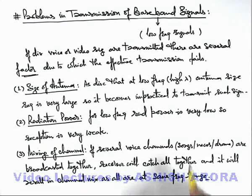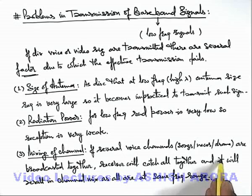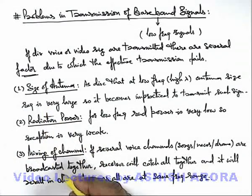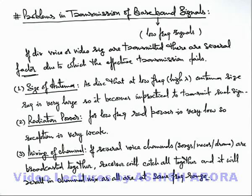All these problems are overcome by a particular technique called modulation. In the coming sections, we are going to discuss modulation and demodulation techniques, by which these three problems are effectively overcome and practical transmission of signals from one point to another becomes possible.